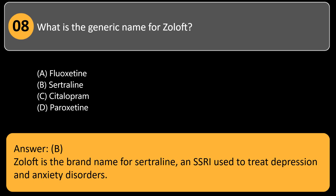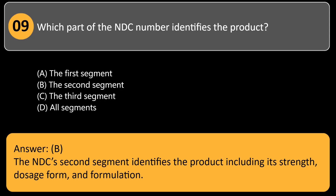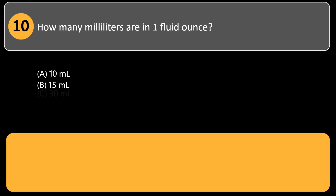Which part of the NDC number identifies the product? A) the first segment, B) the second segment, C) the third segment, D) all segments. Answer: B. The NDC second segment identifies the product, including its strength, dosage form, and formulation.